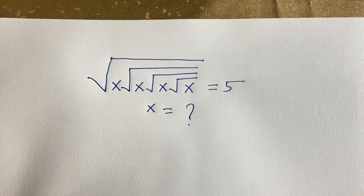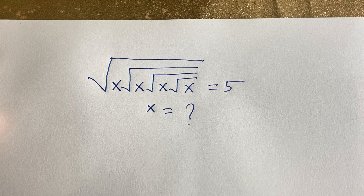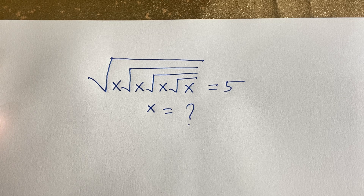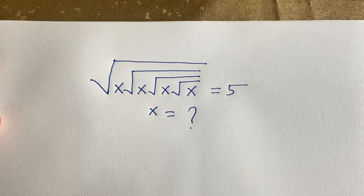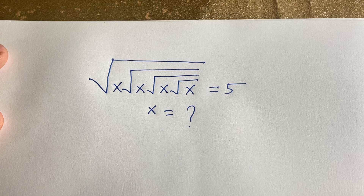Hello everyone. In this video we solve this interesting and tricky math olympiad question: the nested square root expression — square root of x times square root of square root of x times square root of square root of square root of x times square root of square root of square root of square root of x — is equal to 5. What does x equal? Let's start.